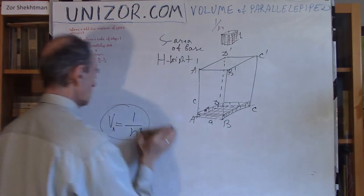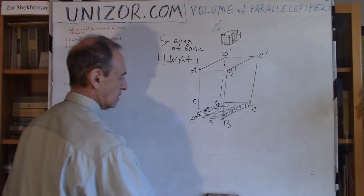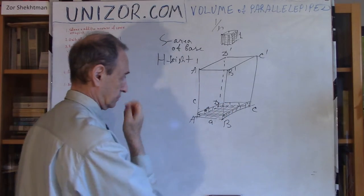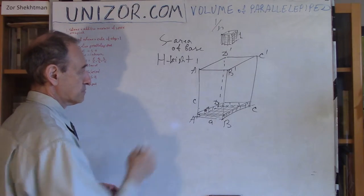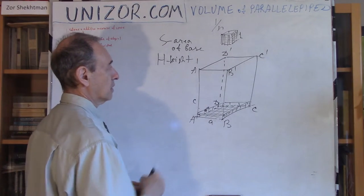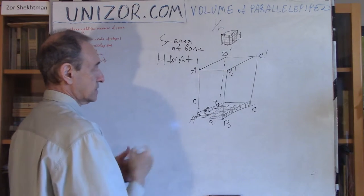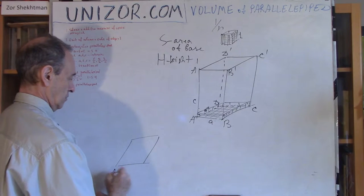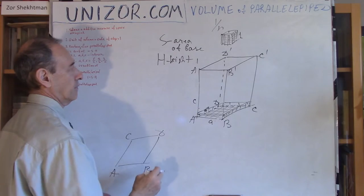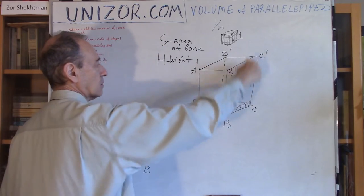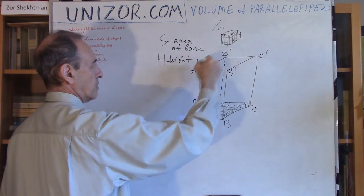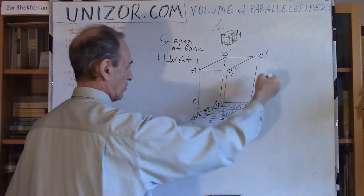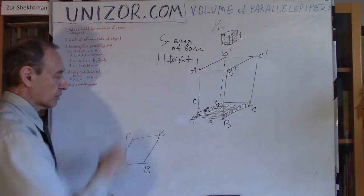Now we assume that A, B, C, G — the base — is not a rectangle but a parallelogram. If you view this parallelepiped from the top, you will see the parallelogram A, B, C, G. Since the side edges are perpendicular to the plane, A prime, B prime, C prime, and D prime will project exactly onto A, B, C, and G.